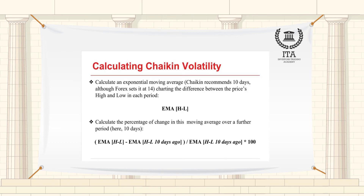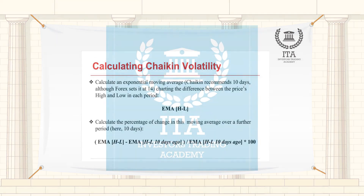The default parameters used to calculate Chaikin's volatility indicator are 10 periods for the exponential moving average timeframe and 10 for the number of data periods used to calculate the percentage change — i.e., the rate of change period. Increasing the number of periods decreases the sensitivity of the indicator, while decreasing the number of periods increases the sensitivity, generating more signals.